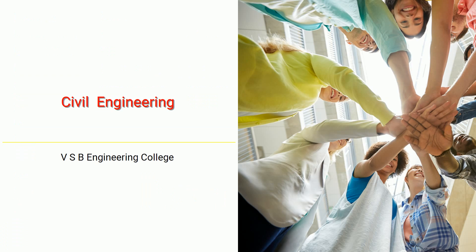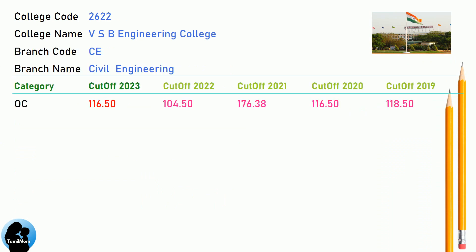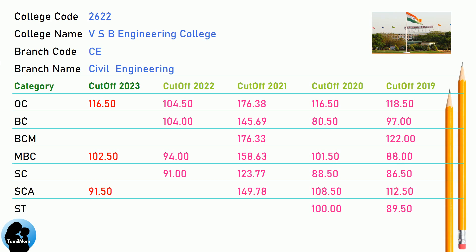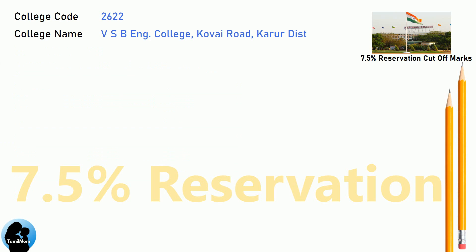DNA Cut-Off for VSB Engineering College in Civil Engineering. DNA 7.5 Reservation Cut-Off for VSB Engineering College in Civil Engineering.